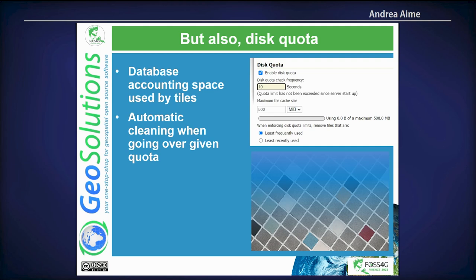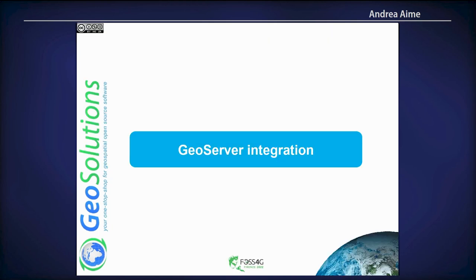When using a blob store, we can use disk quota to limit the amount of tiles stored on disk during dynamic caching. You say, for example, I have 200 gigabytes dedicated to tile caching — no more. When the limit is reached, it cleans up the least-used tiles.